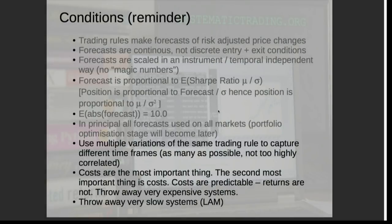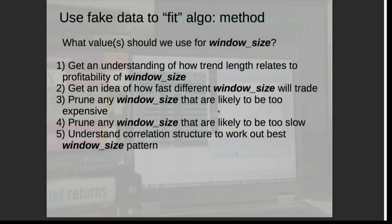Back to the framework conditions: we use multiple variations of the same trading rule — the same algo with different parameters — and costs are very important. So we're moving to the next stage: using fake data. Fake data will answer basically the single question: what values should we use for the window size N? We want to understand the relationship between trend lengths and window size, get a quantitative understanding of the trading speed of different window sizes, prune any window sizes that are likely to be too expensive or too slow, and use fake data to look at the correlation of the same algo with different window sizes. If we've got a window size of 120, what's the correlation between that and 130 or 140? What's the correlation between a window size of 10 and one of 256? With that correlation structure we can work out how many window sizes we need and how they should be spaced out.